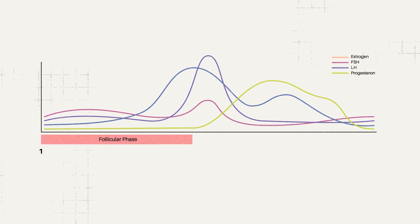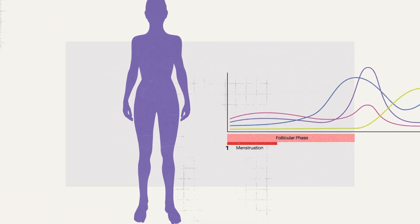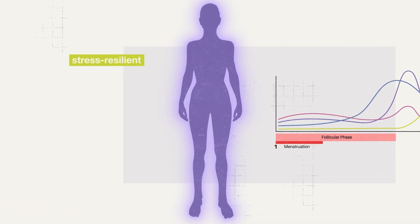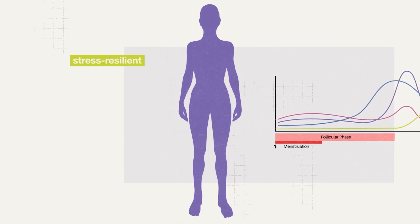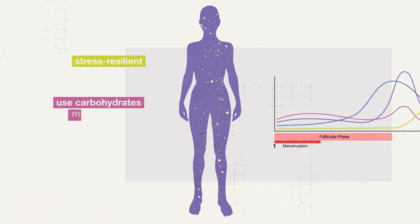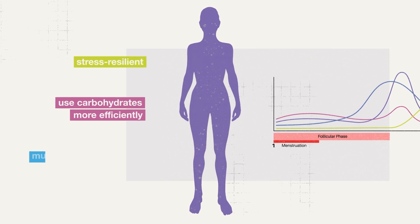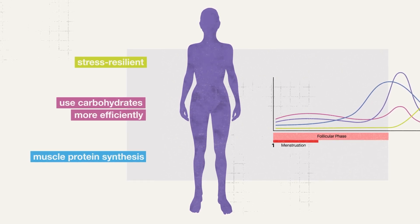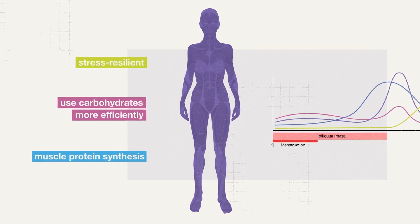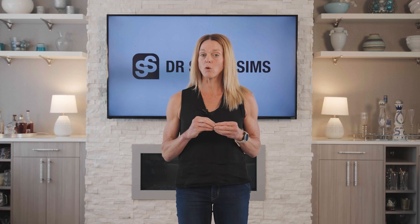In the low hormone or follicular phase, our bodies are more stress resilient. We're able to use carbohydrate more efficiently, and we see an impetus for more muscle protein synthesis. That stuff holds true.